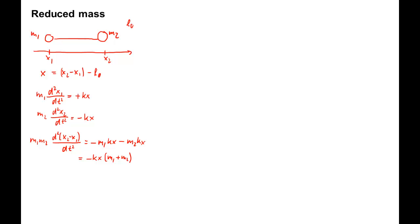On the left-hand side, x2 minus x1 can be replaced by the full expression, including L0, that is the displacement, without changing the second derivative. Let's also divide by m1 plus m2. So we get m1 m2 divided by m1 plus m2 times d squared x dt squared equals minus kx.